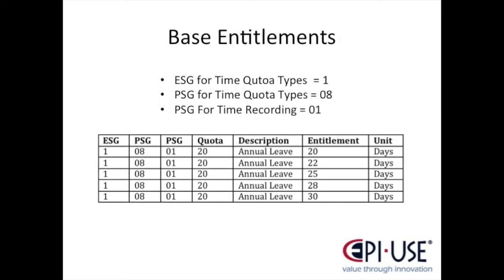So let's say the groupings we're looking at are as follows: the ESG for time quota types is 1, the PSG for time quota types is 08, and the PSG for time recording is 01. A range of base entitlements can then be created. The table shows that entitlements for annual leave for these groupings range from 20 to 30 days, but so far we haven't said what entitlements should relate to each type of employee. This is where the quota selection rule comes in. The quota selection rule is defined by a feature or user exit that interrogates the groupings of each employee and assigns them to a selection rule.